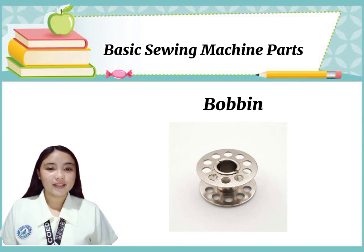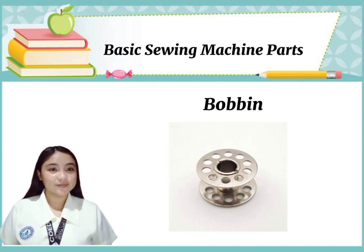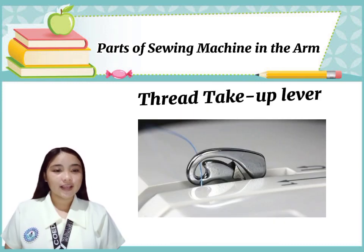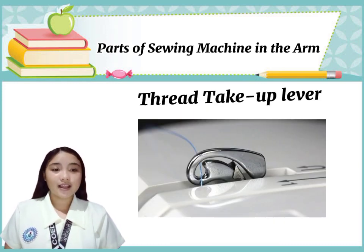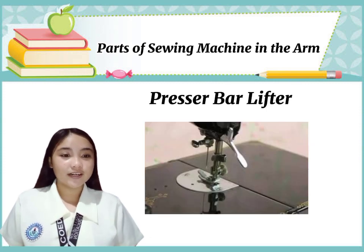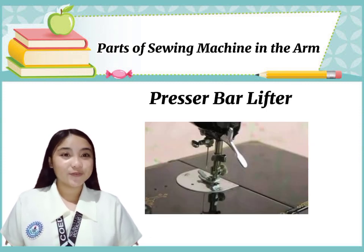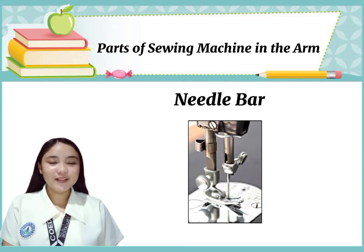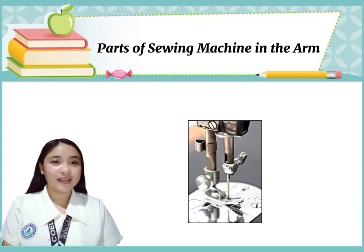Eleventh, bobbin — it is a metal spool for winding thread. The parts of the sewing machine in the arm: thread take-up lever releases the thread that interlocks with the bobbin thread. Presser bar lifter moves the presser foot. Tension controls the looseness and tightness of stitches. Needle bar holds the needle in place.